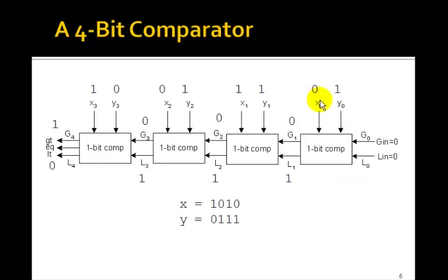It starts with the least significant bit. It compares x0 to y0, although that's 0 and 1. And since x is less than y, then l1 is going to be 1.